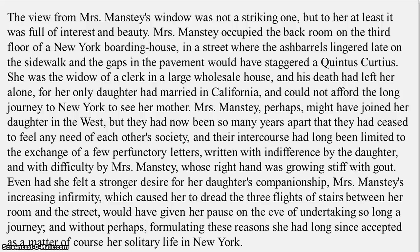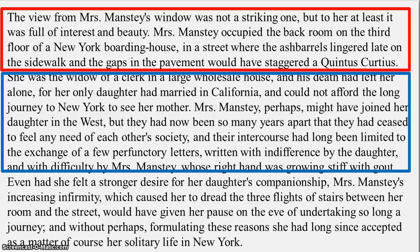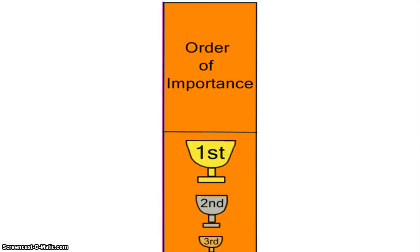I see three different parts to this paragraph. In the first section, it does what we're used to seeing — a description of the setting, where she lives and what the landscape looks like. In the next section, it addresses Mrs. Manstey's relationship with her daughter, which is actually the majority of the paragraph. Then in the last section, it talks about Mrs. Manstey's acceptance of her situation. Whereas Wharton does use a lot of descriptive writing in this text, I think this first paragraph is organized by order of importance, from least important to most important.